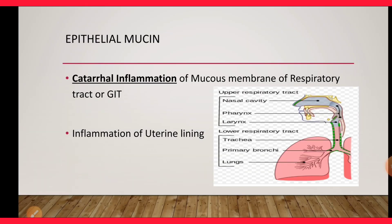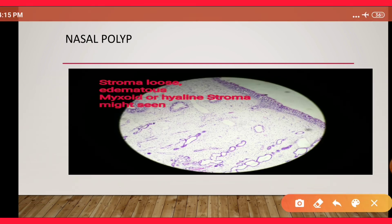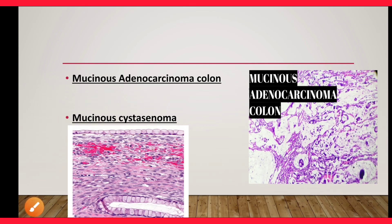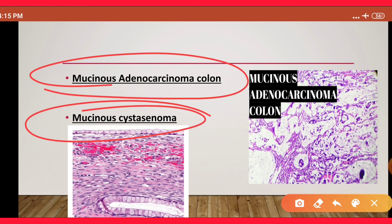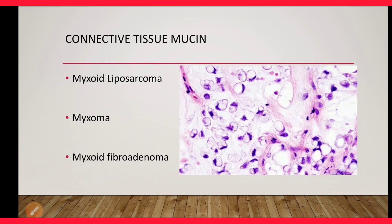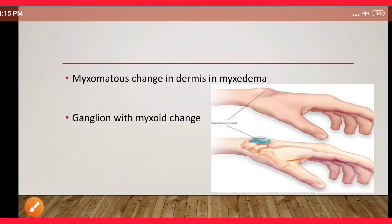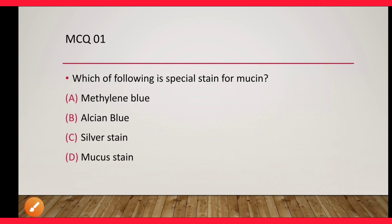To summarize: examples of epithelial mucin production include bacterial inflammation of the respiratory tract, GIT epithelium, and uterine lining; nasal polyp; mucocele in the oral cavity; cystic fibrosis of the pancreas; mucinous adenocarcinoma of the colon; and mucinous cyst adenoma of the ovary. Examples of connective tissue mucin production include myxoid liposarcoma, cardiac myxoma, myxoid fibroadenoma of the breast, ganglionic cyst, and myxedema.